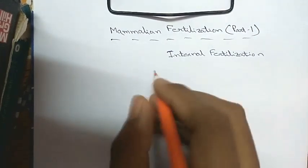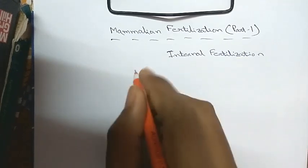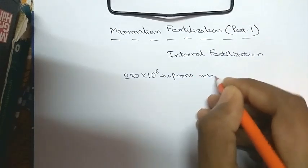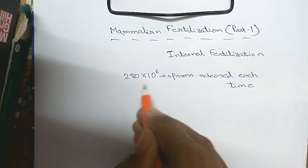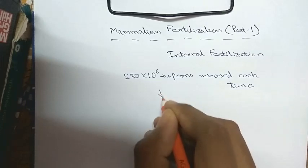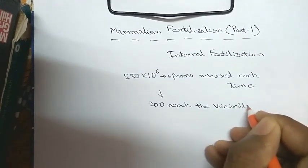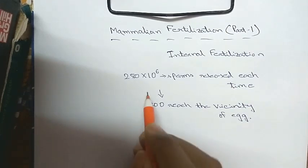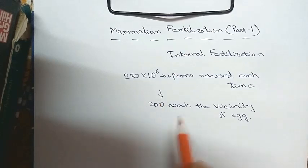Another thing you should know — citing the example of humans — in each ejaculation around 280 × 10⁶ sperms are released. Among these 280 × 10⁶ sperms, only about 200 reach the vicinity of the egg. So as you can see, the chances are less than one in a million. If you are watching this video you can consider yourself comparatively lucky, because you are quite special. Anyway, moving on.